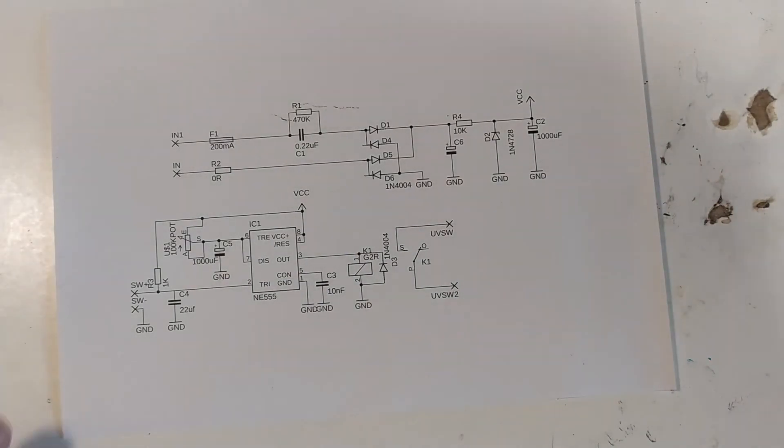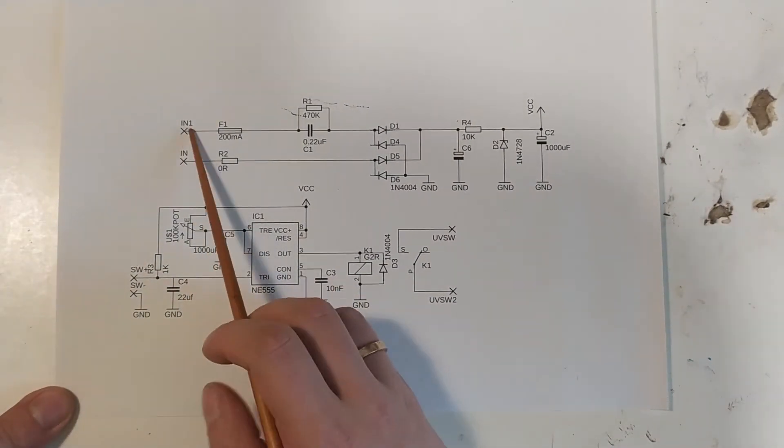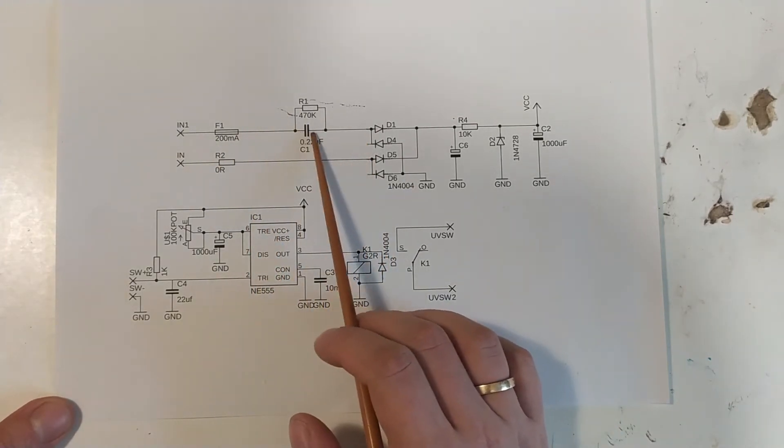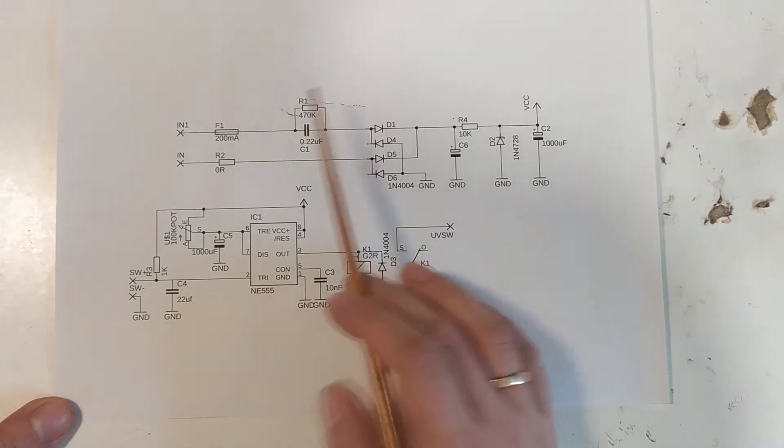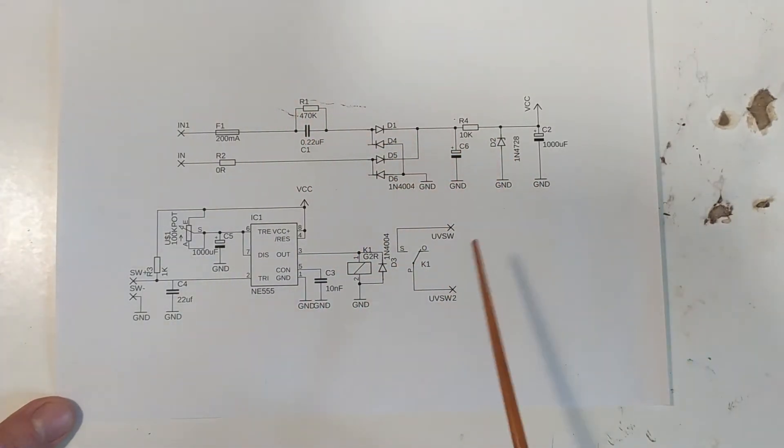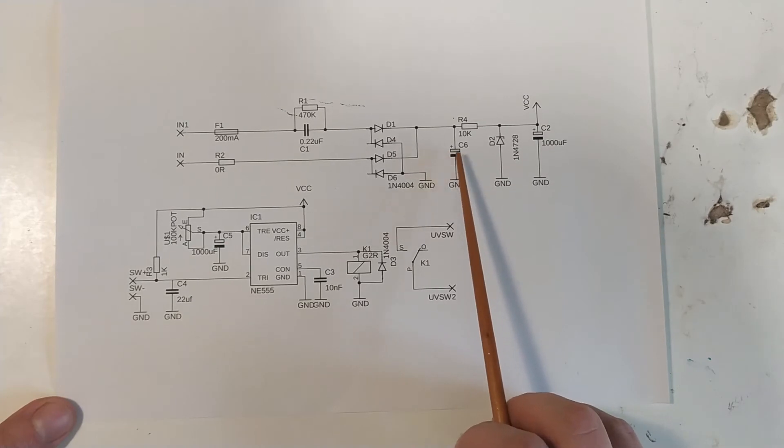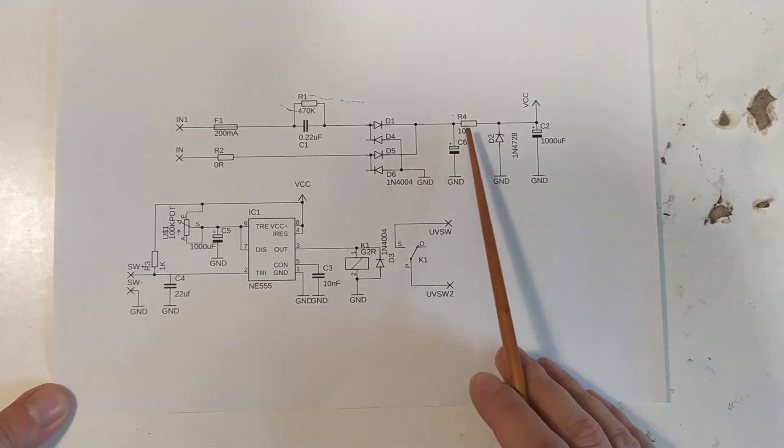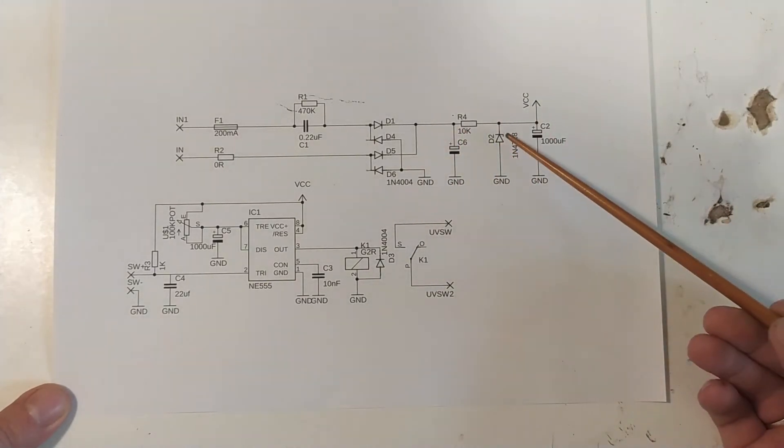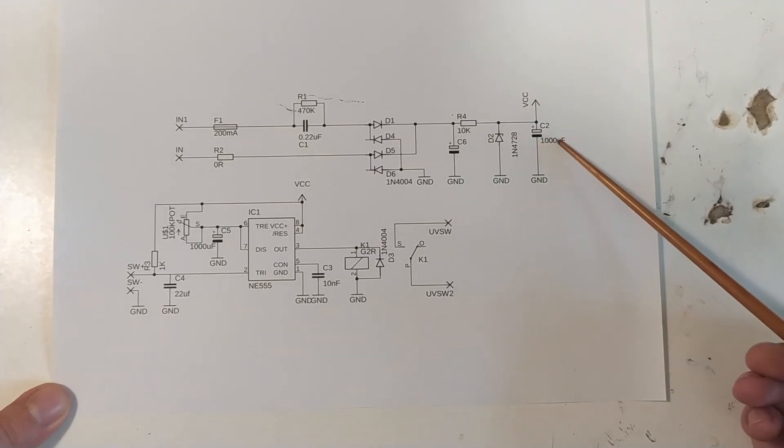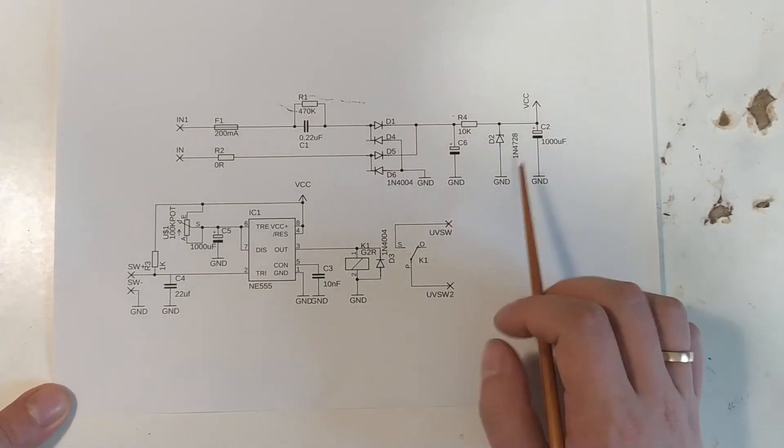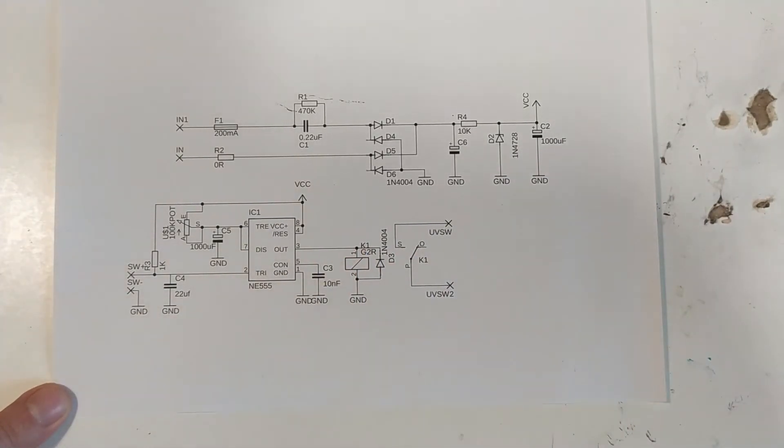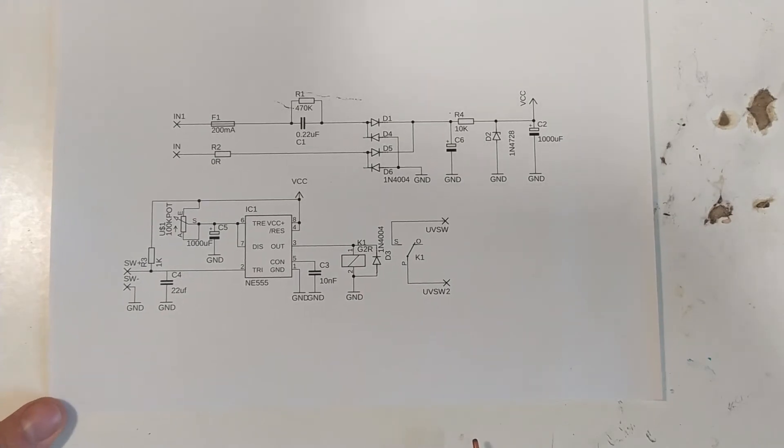So let's go over the capacitive power supply. We've got our mains coming in here, going through a 200 milliamp fuse, going through a capacitor with associated resistor, going through a bridge rectifier, charging up this 47 microfarad 400 volt capacitor, then going through a 10k resistor into a zener diode, charging up this 1000 microfarad at 32 volt. And this is an 18 volt zener, because this relay is 18 volts. And that is just about it.